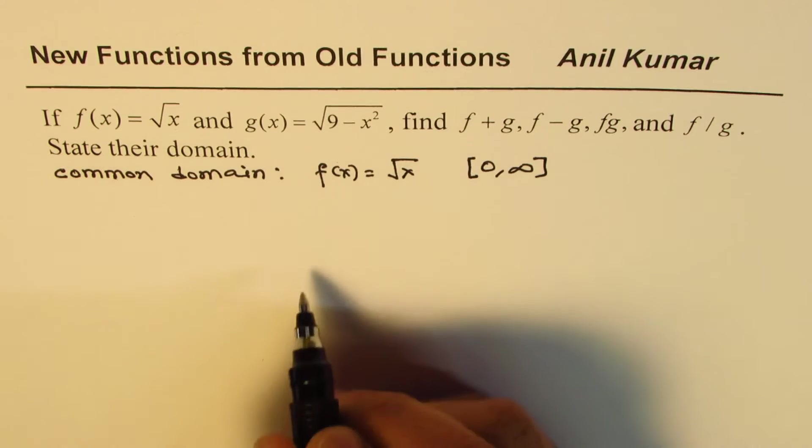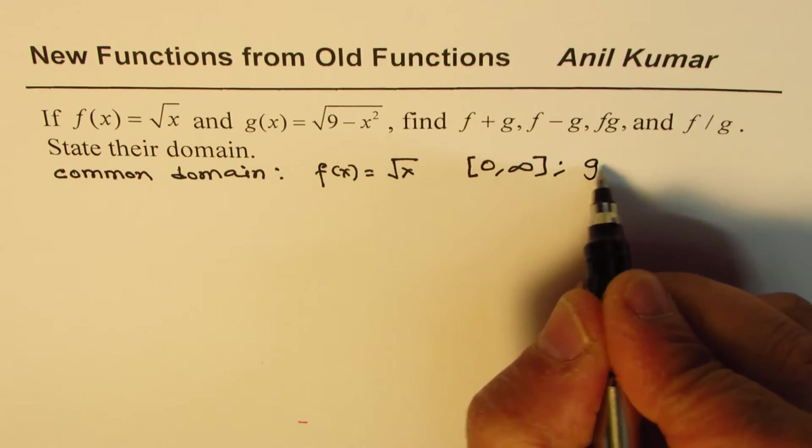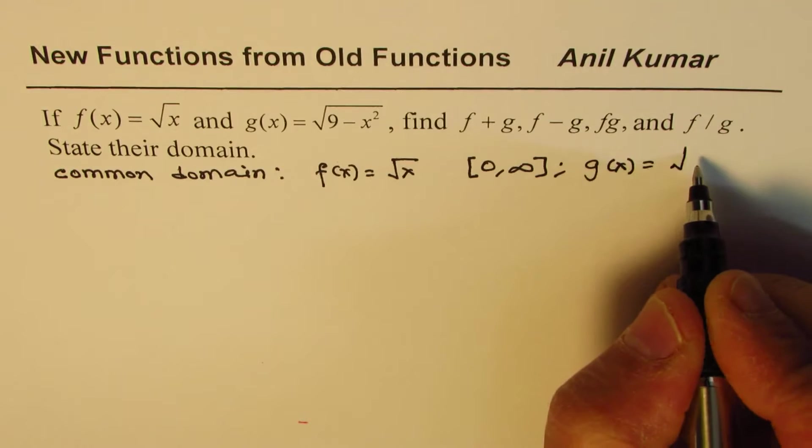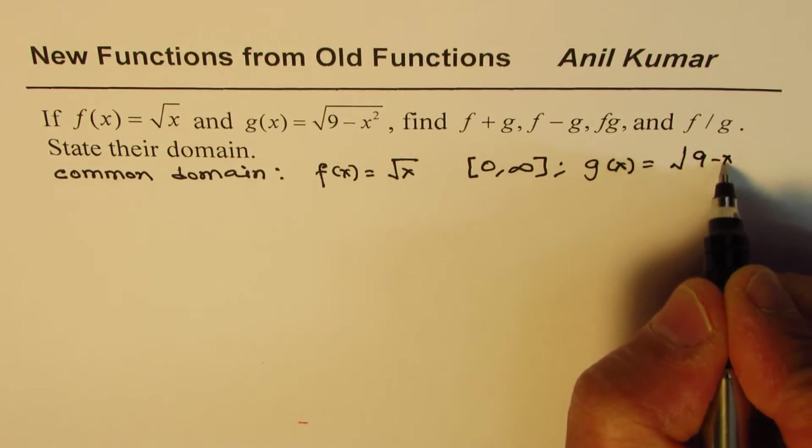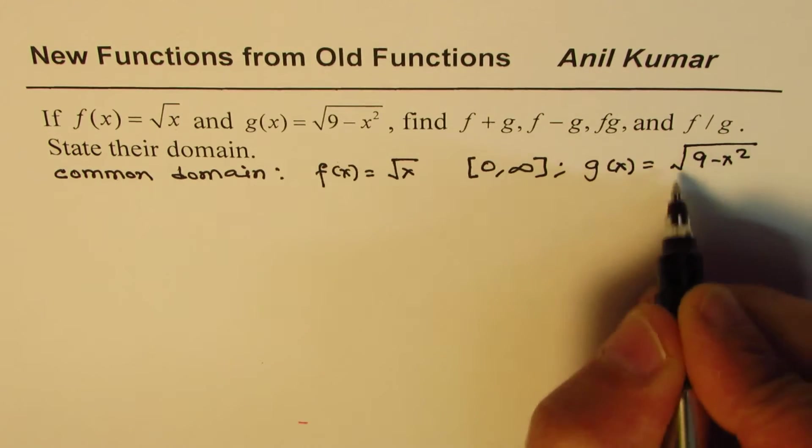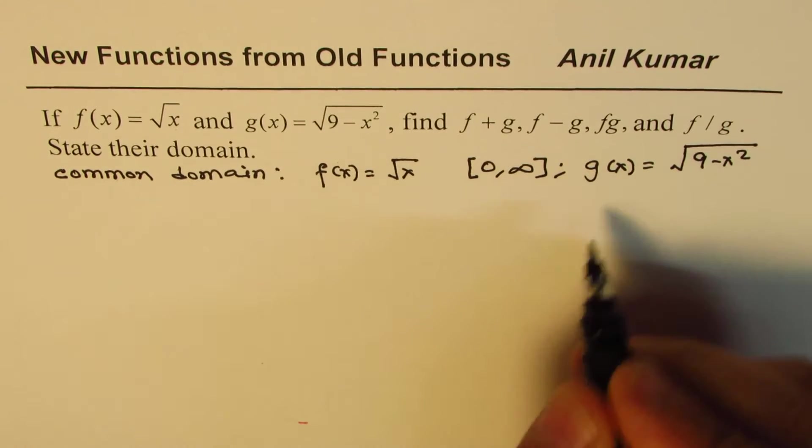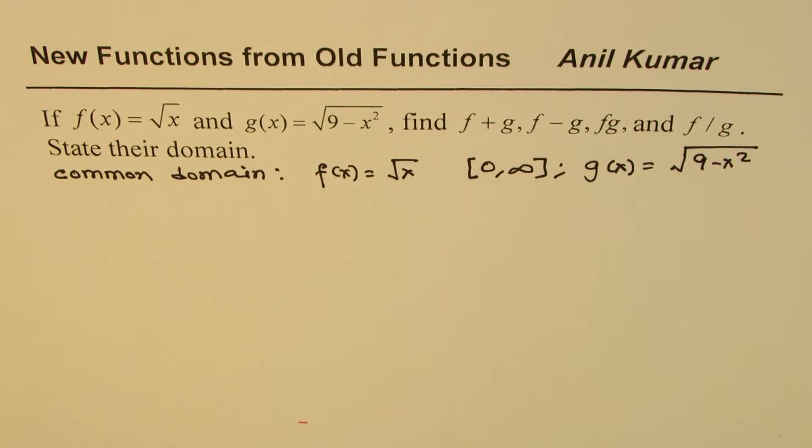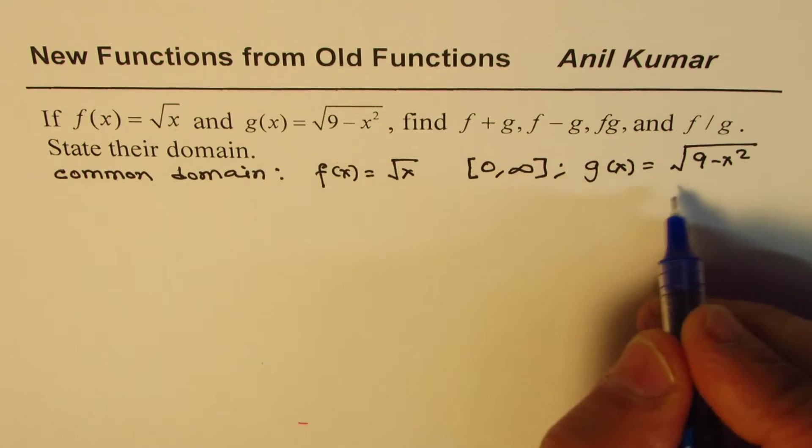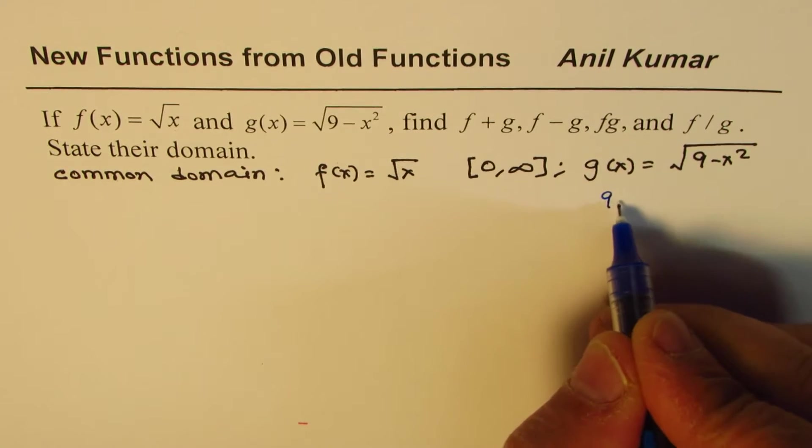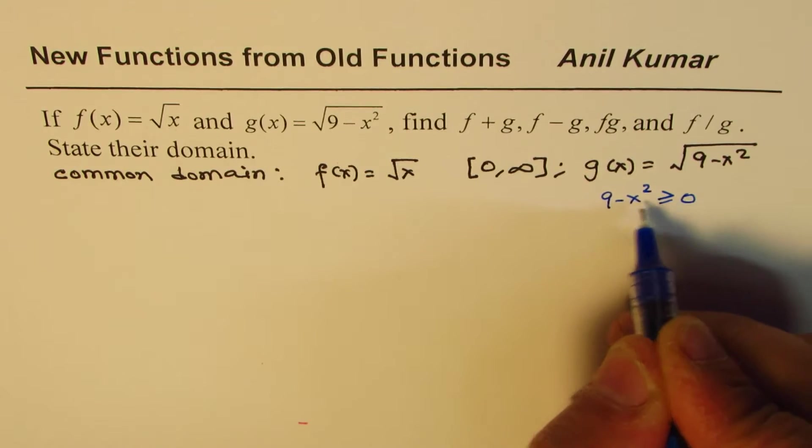How about g(x)? g(x) equals square root of 9 minus x squared. So here we can find the domain. Now let's do some work to get this domain. So 9 minus x squared should be actually greater than or equal to 0.